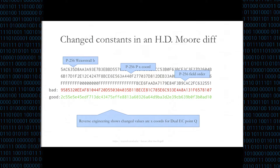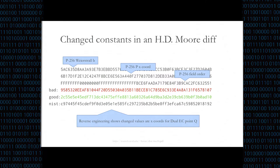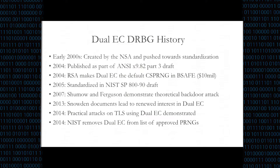It's interesting to note that both of these values — the safe and unsafe value according to Juniper — neither of them are the NIST standard value that you would use for Q if you're implementing dual EC as NIST suggested. A little bit about dual EC: it's a random number generator, one of the generators approved by NIST. It was originally designed by the NSA and pushed for standardization in NIST. In 2007, Shumo and Ferguson demonstrated a theoretical backdoor attack in dual EC.